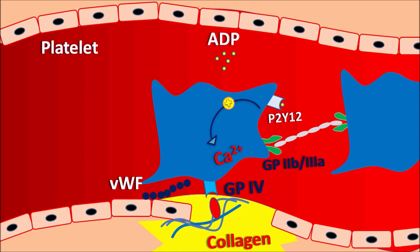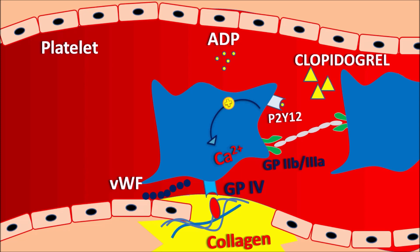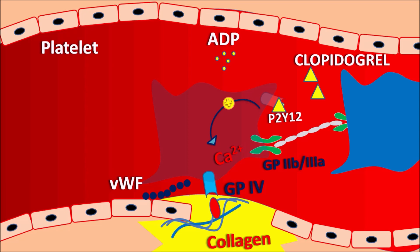Clopidogrel inhibits ADP-dependent platelet aggregation. It binds to P2Y12 receptors and inhibits them such that platelets are not aggregated. In this way, clopidogrel acts as an anti-platelet agent.